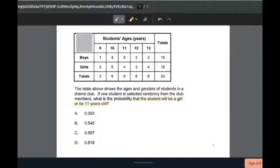Our probability will be that the student randomly selected will be a girl or be 11 years old. These two events are not mutually exclusive, so we'll have to apply the probability of a union formula.